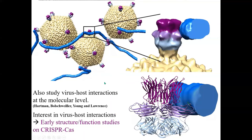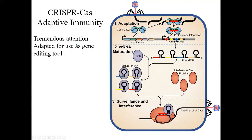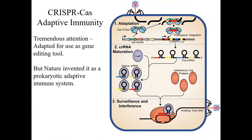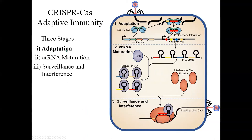This interest in virus-host interactions led to an early interest in structure-function studies for CRISPR-Cas. Most of you have heard of CRISPR-Cas — it's gained attention as a gene editing tool, but that's not why nature invented it. Nature invented CRISPR-Cas as a prokaryotic adaptive immune system found in about 40% of bacteria and 90% of archaea. How does it work? It has three stages: an adaptation stage, a CRISPR-RNA maturation stage, and stage three, which is surveillance and interference.